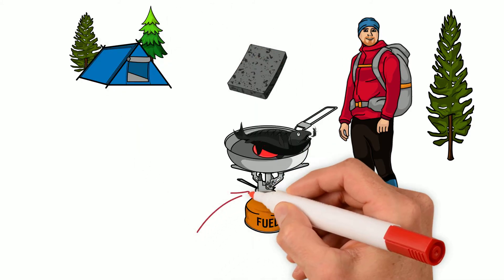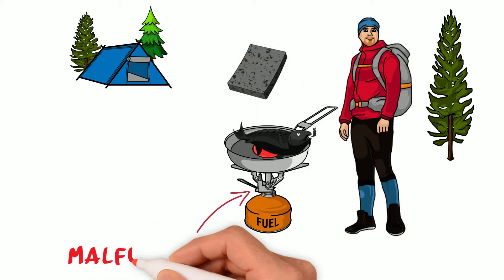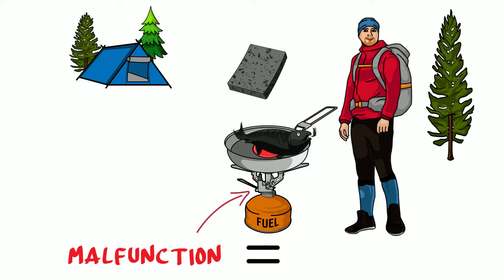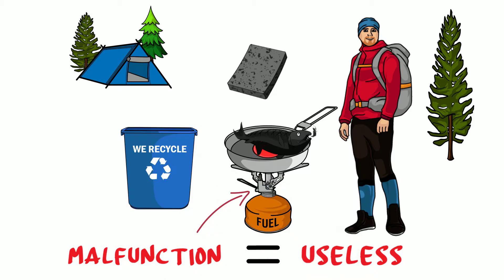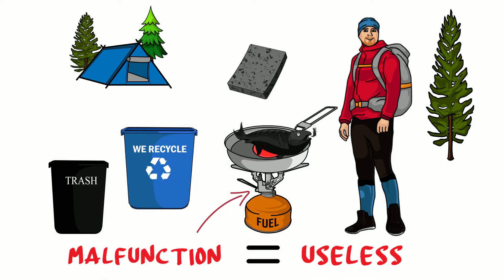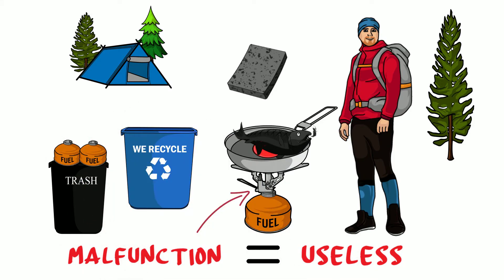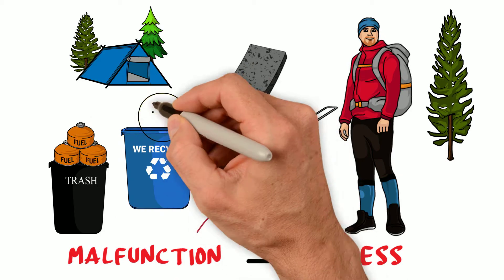With two days left on his trip, the fuel valve malfunctioned rendering his fuel stove useless. Also, despite his best efforts to be eco-friendly, the empty canisters he had to pack out weren't refillable so he had to throw them away when he got home.